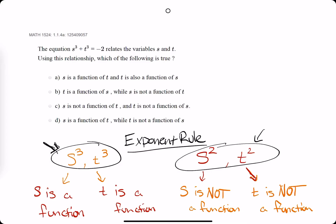If you see s squared, that means s is not a function of t, and if you see t squared, that means t is not a function.